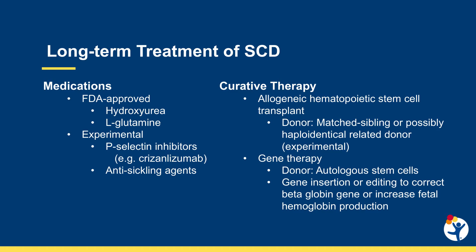L-glutamine has also recently been approved by the FDA for use in patients with sickle cell disease. In a prospective randomized controlled trial, patients taking L-glutamine in addition to hydroxyurea had a decrease in frequency of vaso-occlusive crises and hospitalizations, duration of hospitalizations, and fewer episodes of acute chest syndrome compared to patients taking hydroxyurea only. We therefore recommend addition of this medication in patients who have had two or more vaso-occlusive events in the preceding year.